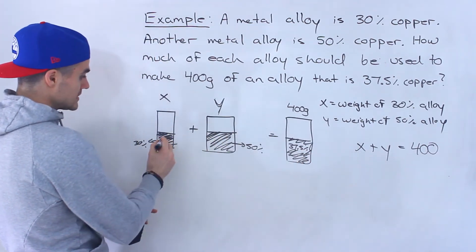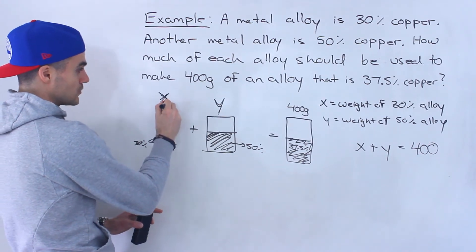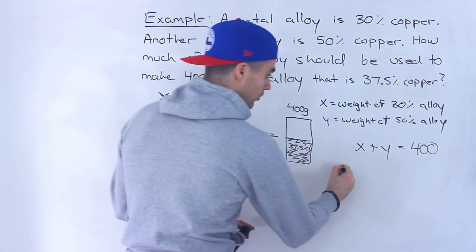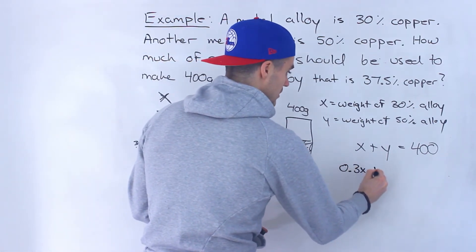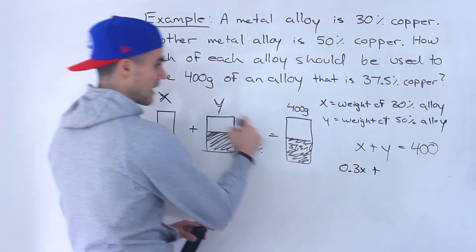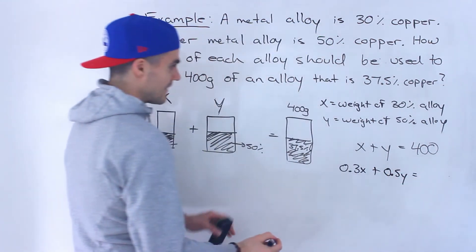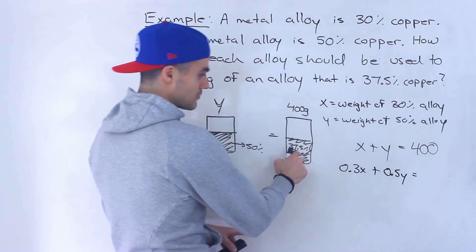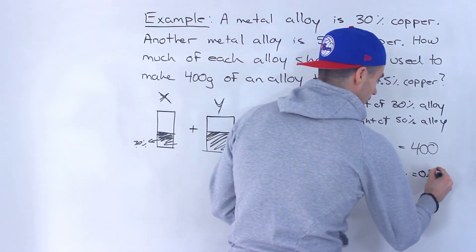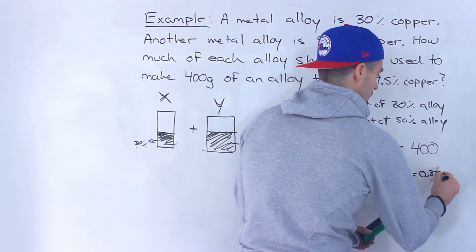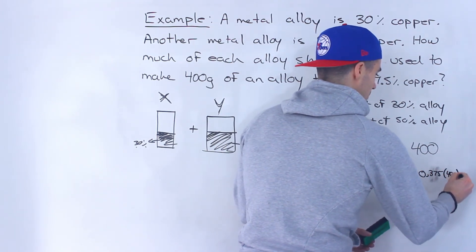So the weight of the copper in this alloy is going to be the total weight which is x, 30% of that weight. So it's going to be 0.3x plus 0.5y and that's going to give us 37.5% of 400, 0.375 times 400.